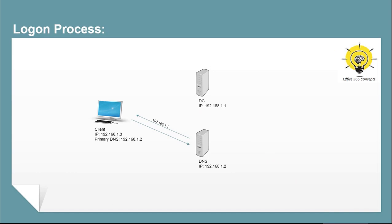Now the client knows the IP address of the domain controller, so the client will forward the authentication request directly to the domain controller and the authentication process begins. If this request fails, the user will not be able to log in. You will not even be able to join a machine to the domain if the DNS server is not available. If you want to find a service within the Active Directory domain, the DNS server should be reachable.